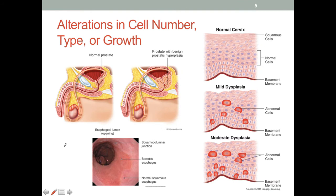In addition to a change in cell size, we can also see alterations in cell numbers, the types of cells, or how they grow. The previous slide with atrophy and hypertrophy refers to the size of the cells, but we could also have an increased number of cells. For example, in this figure of prostate hyperplasia — which means the increase in the number of cells — this will make the prostate tissue much bigger and it may impede the normal flow of urine and create some very uncomfortable symptoms.